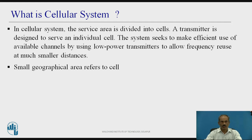Before going further, you will come to know what is a cellular system. In a cellular system, the service area is divided into cells. The transmitter is designed to serve an individual cell. Here, transmitter refers to the base station of the cellular system. The system seeks to make efficient use of available channels by using low power transmitters to allow the frequency reuse concept at a much smaller distance.